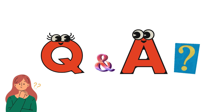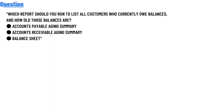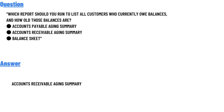Today's question is: which report should you run to list all customers who currently owe balances, and how old those balances are? The options are Accounts Payable Aging Summary and Accounts Receivable Aging Summary. The correct answer is Accounts Receivable Aging Summary.